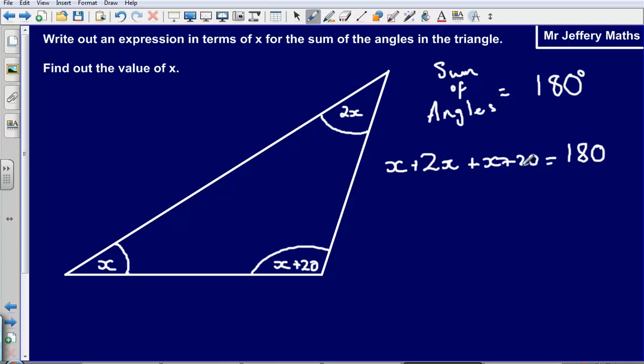Now, let's tidy this up a little bit, collect our x's together, collect our numbers together. x plus 2x plus x, that gives me 4x's. 4x plus 20. I haven't got any other numbers to add together, so it's just 4x plus 20 is equal to 180.